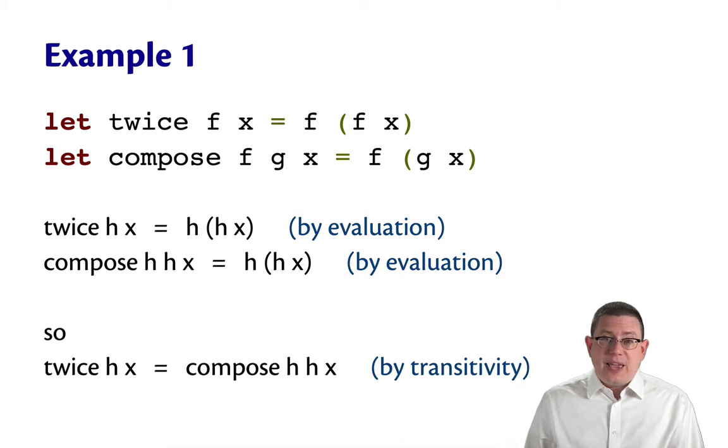Therefore, twice h x equals compose h x. Why is that? Well, you can follow it by transitivity from twice to h x to compose. All of these are going to evaluate to the same value. That's why they're equal.